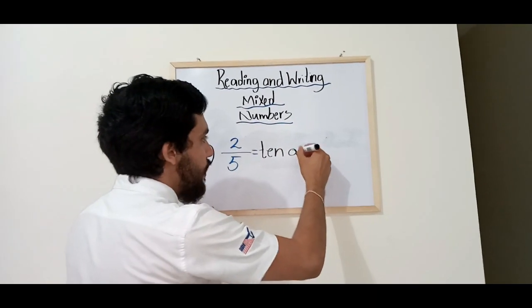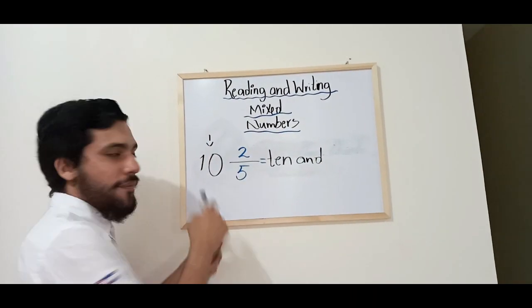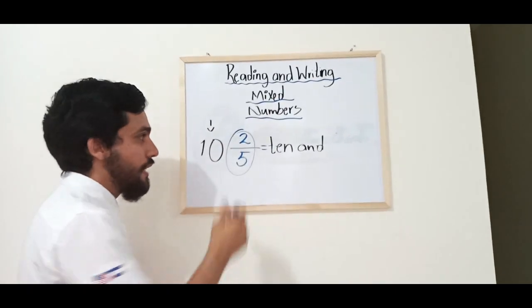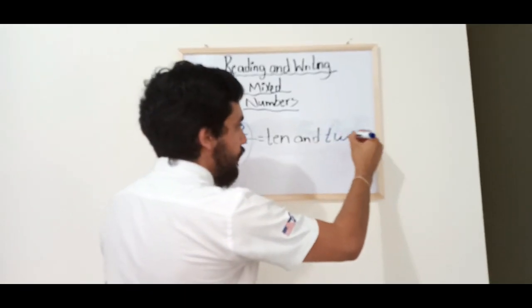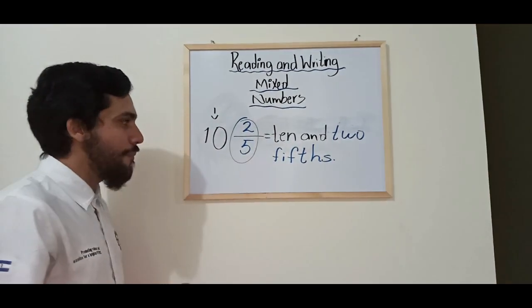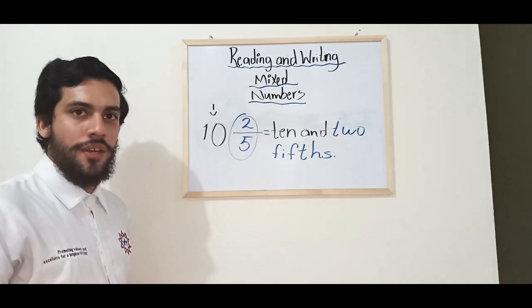And after 10, you're going to include the word 'and', because you have two things. And this fraction is read as 2 fifths. Alright? So this is the name of this mixed number.